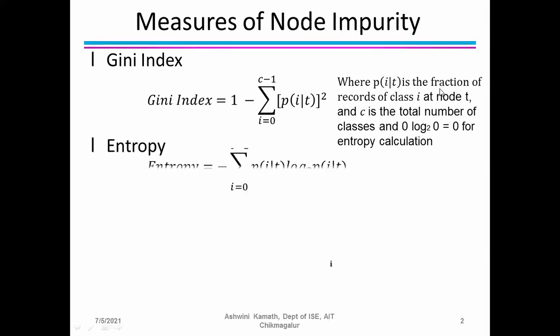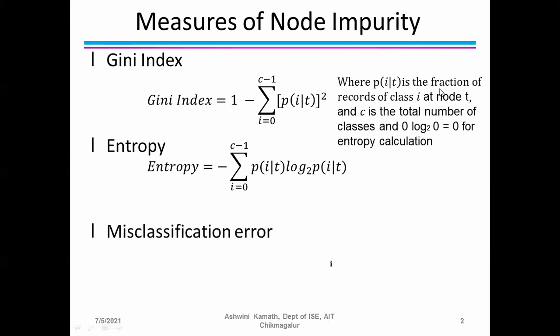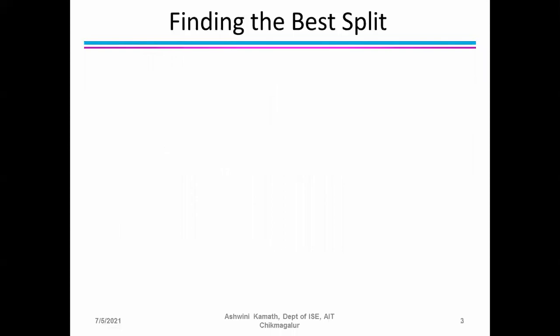The entropy formula is: Entropy = −∑(i=0 to c−1) p(i|t) · log₂(p(i|t)). The misclassification error is equal to 1 minus the maximum of p(i|t). We'll discuss these with examples so you'll understand how each works.